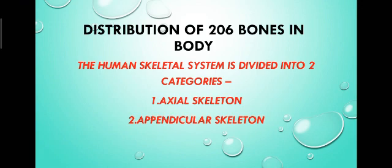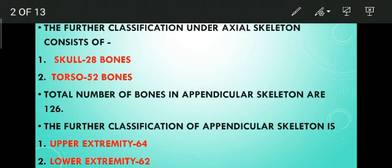We know that the human body consists of 206 bones. It is divided into two categories: axial skeleton and appendicular skeleton. In axial skeleton, the total number of bones are 80 and it consists of skull and torso. When we categorize skull and torso, skull has a total number of 28 bones whereas torso has 52 bones.